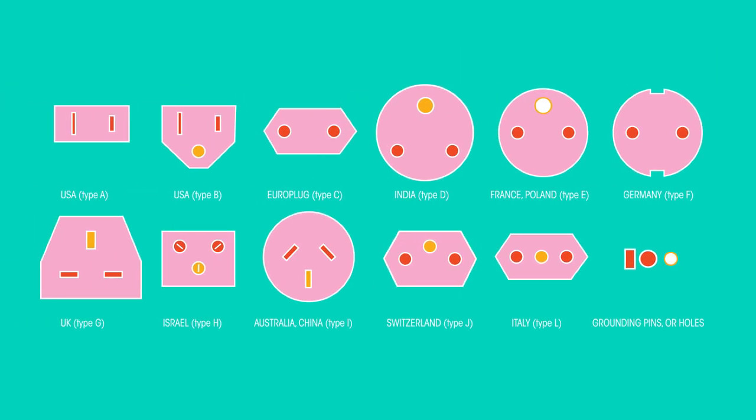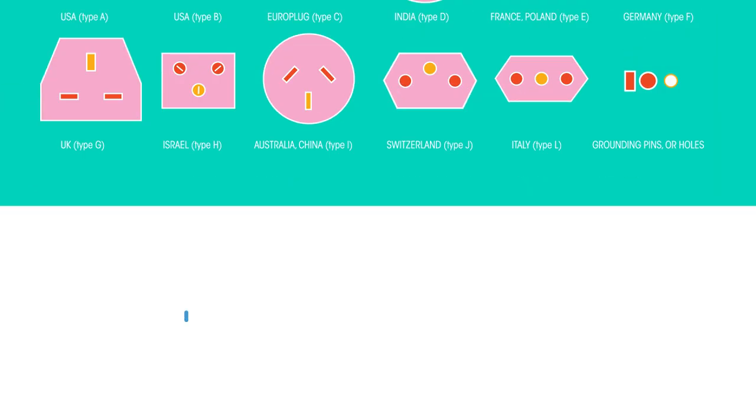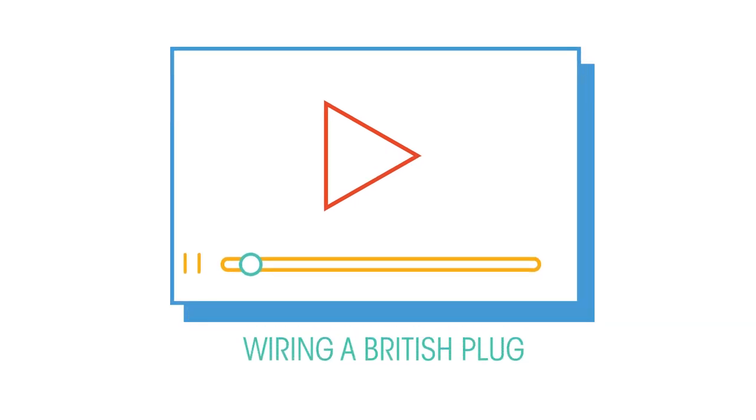There are now 15 different types of plug sockets all around the world. To learn how a British plug is wired, watch this video.